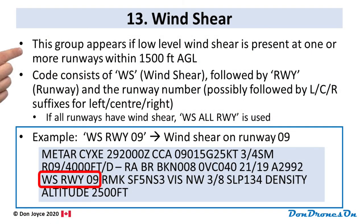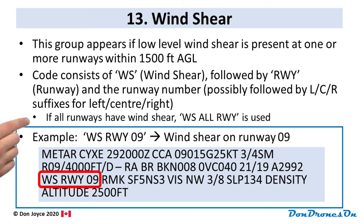Group 13 is wind shear, and we're almost done. This group appears only if low-level wind shear is present at one or more runways within 1,500 feet above ground level. You'll know there's a wind shear group because it starts with WS, followed by the runway number — RWY and then the actual number, which could also have L, C, or R for parallel runways. If all runways have wind shear, it will say WS ALL RUNWAYS. In our example, it shows WS RWY 09 — wind shear on runway 09.